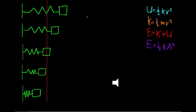Welcome back. In the last video we found mathematical expressions for different types of energy including potential energy, kinetic energy, the total energy, and the relationship between them all. In this video what we're going to try and do is really see what these expressions mean and how they apply for the mass and spring system. To do that we're going to look at how the energy changes as a function of displacement and as a function of time, both qualitatively and graphically.